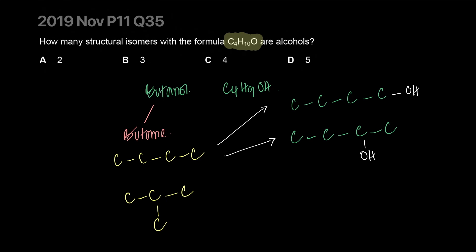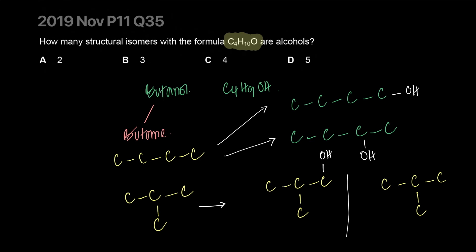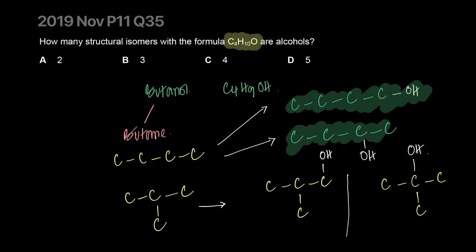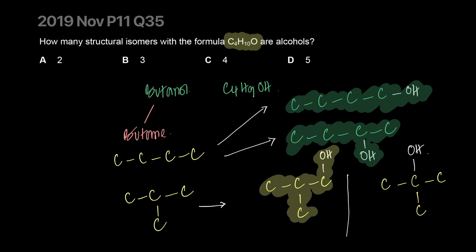There are only two isomers for the branched butane structure. For the straight chain, you can have OH on the first carbon or the second carbon - nowhere else. So you have four isomers total: first, second, third, and fourth. The answer is C.